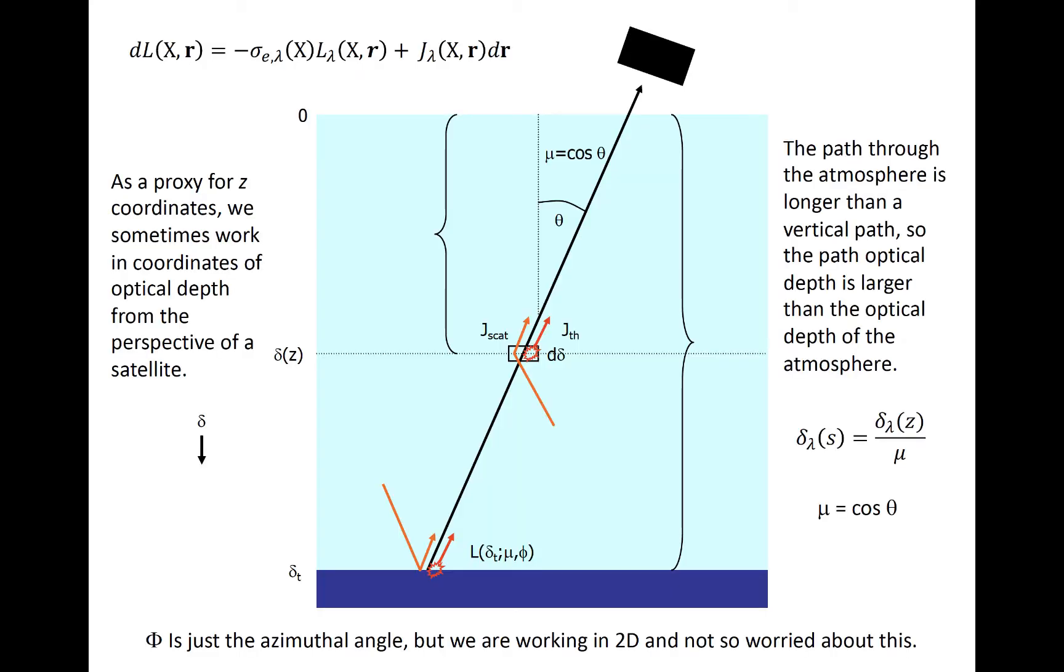Consider again an atmosphere with optical depth that varies with height. From the point of view of a satellite, the optical depth at the top of the atmosphere is zero, and the optical depth of the atmosphere in this example is delta sub t.